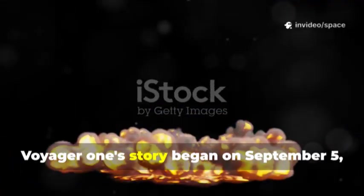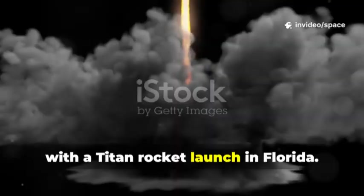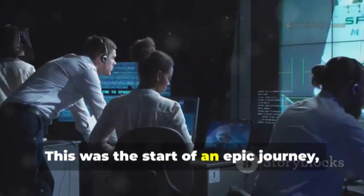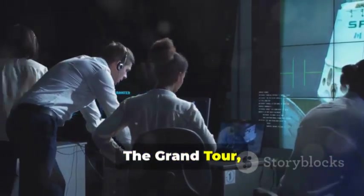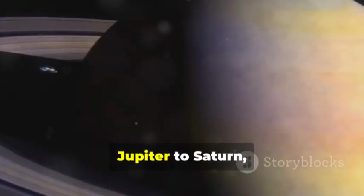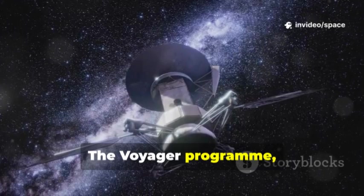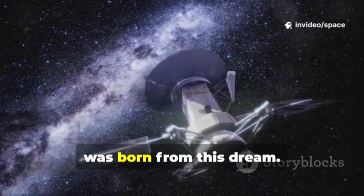Voyager 1's story began on September 5, 1977, with a Titan rocket launch in Florida. This was the start of an epic journey, the Grand Tour, using a rare planetary alignment. The spacecraft would slingshot from Jupiter to Saturn, studying these giants up close. The Voyager program, including Voyager 2, was born from this dream.